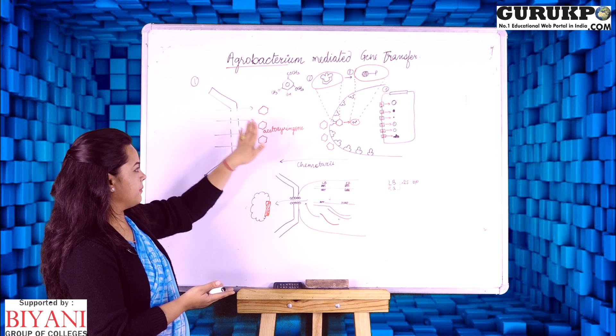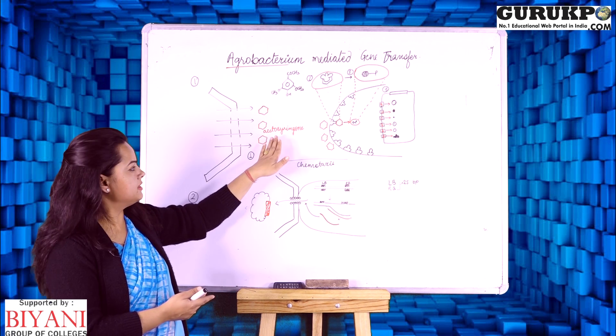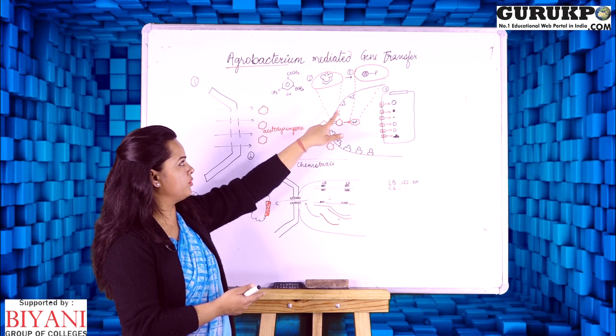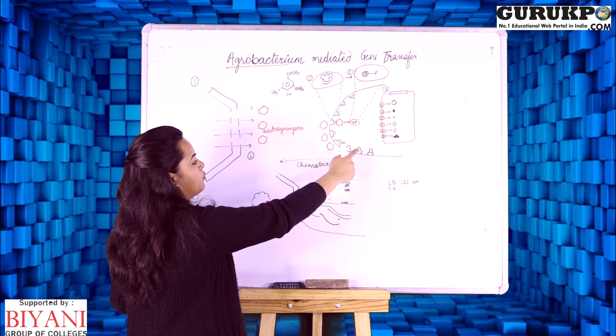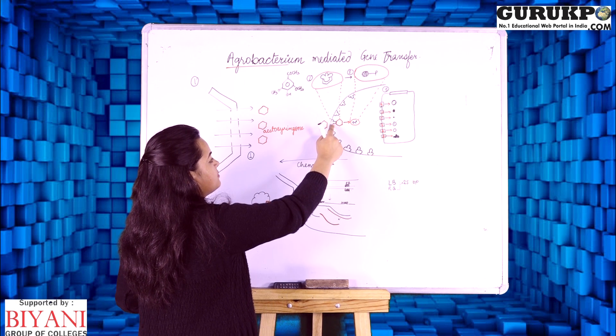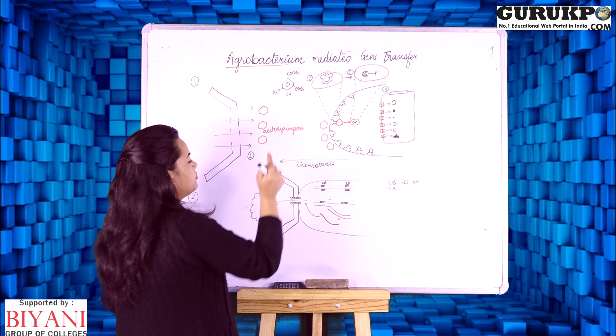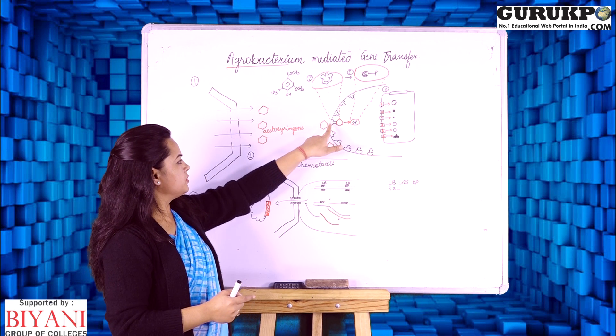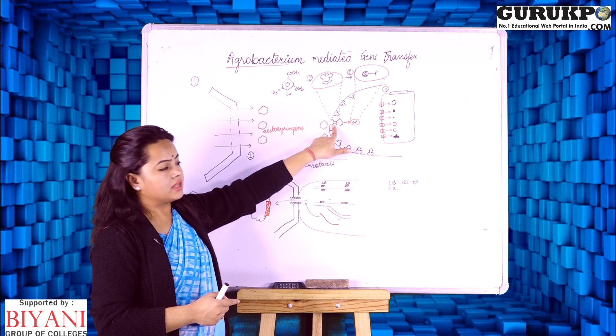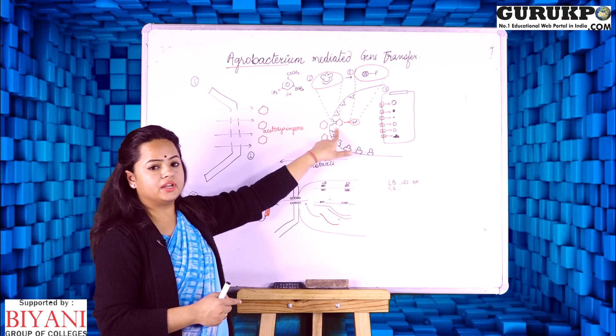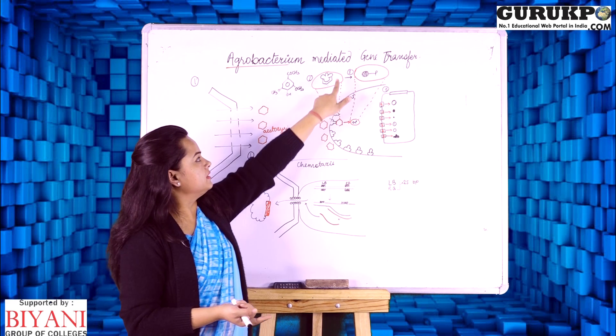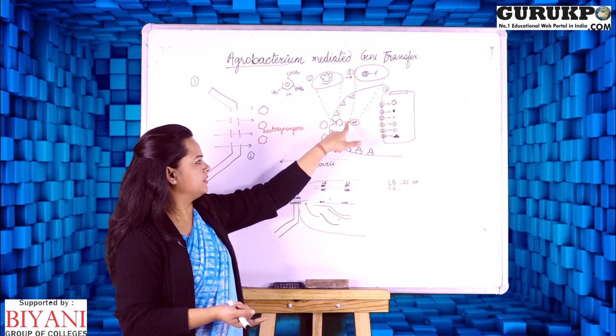Plant will release a chemical that is acetosyringone and this acetosyringone has been sensed by the bacterial cell wall protein, that is a VirA protein present at the cell wall of the bacterial cell. A complex will be formed as we can see in step 2, a complex will be formed between the acetosyringone molecule and the VirA protein of the bacterial cell.